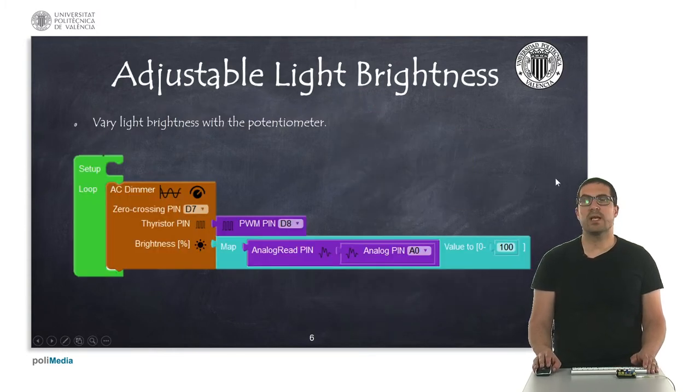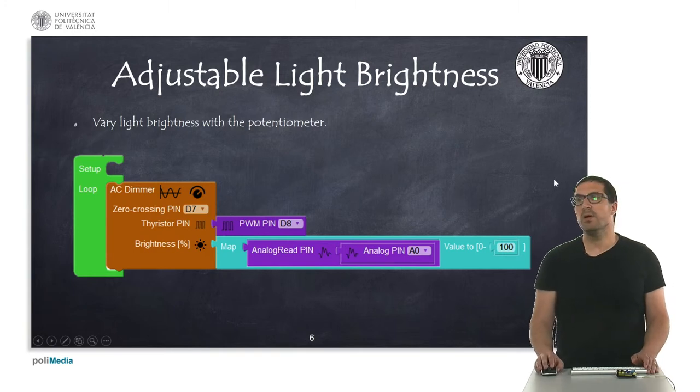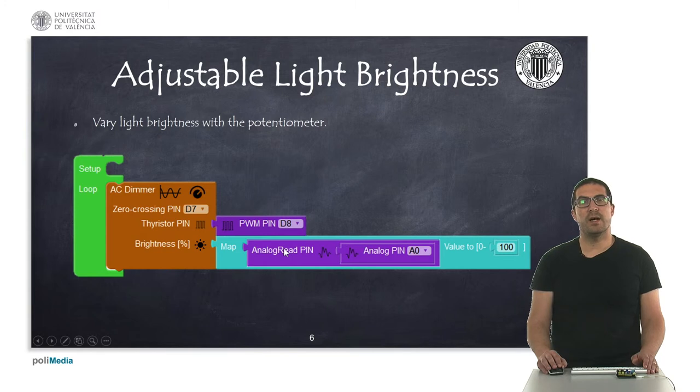In this second example, what we're showing is how to regulate the light brightness based on the potentiometer that the Arduino multi-sensor shield has connected to pin A0. Here basically what we're doing is generating a map.